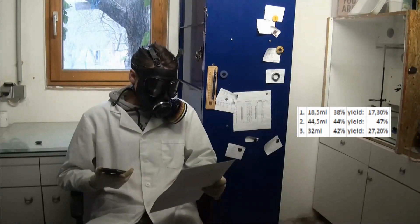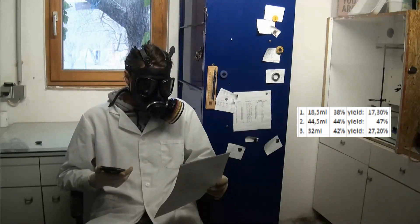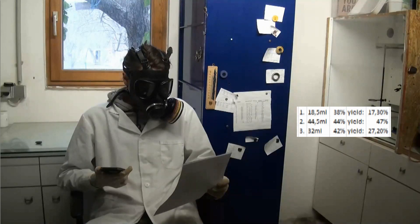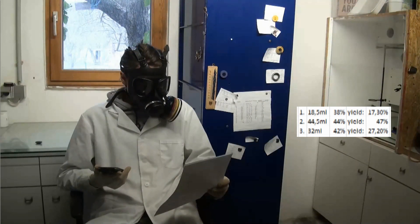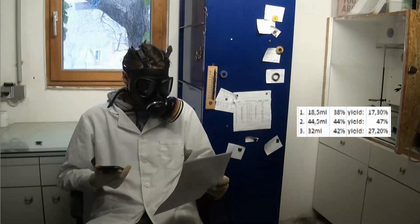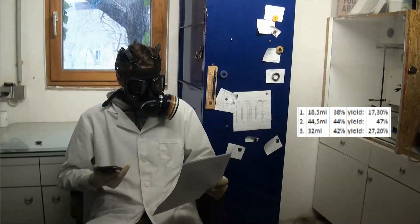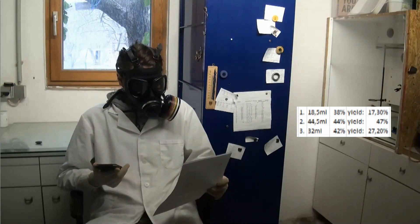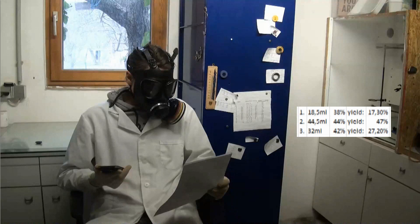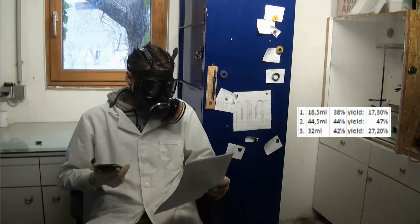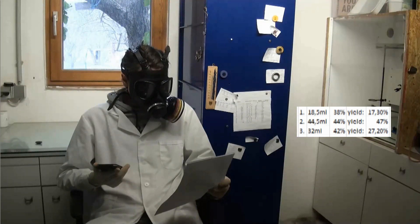I also did a third distillation using 1 mole of potassium nitrate and 0.7 moles of phosphoric acid, which gave me 32 milliliters of 42% nitric acid, which corresponds to a yield of 27.2%.